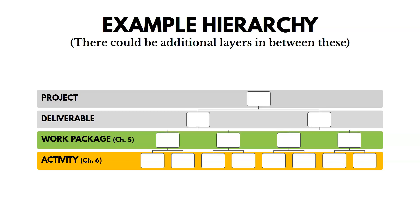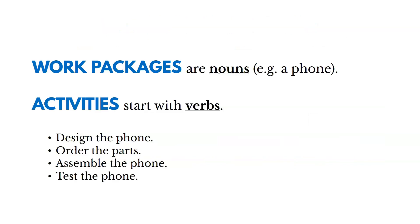In the next chapter, we're going to talk about activities. Work packages are often nouns — like a phone you're creating on a particular project. Activities, on the other hand, often start with verbs: we design the phone, order the parts, assemble it, test it, and so on. Right now in the WBS, we're just talking about work packages; we'll break it out into activities later.